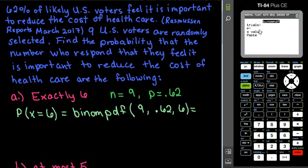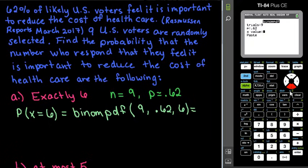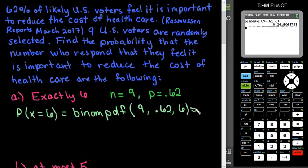If this screen does not pop up, you would enter it into your calculator exactly as written: 9, comma, 0.62, comma, 6. The comma button is right above the seven. Since this screen shows up, I just fill it in. The number of trials is nine, the probability of success is 0.62, and the X value is six because we're looking for exactly six. Hit paste, and we end up with approximately 0.2618.